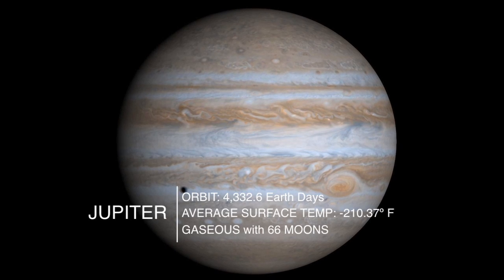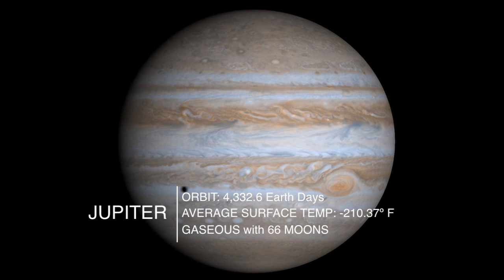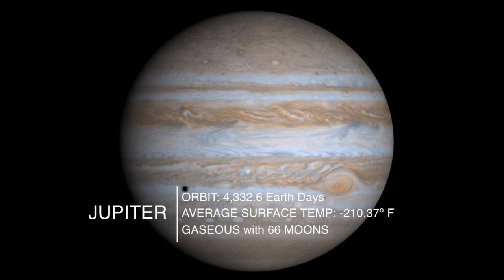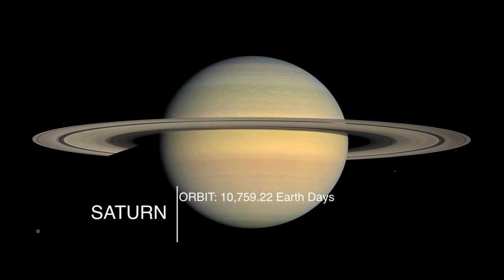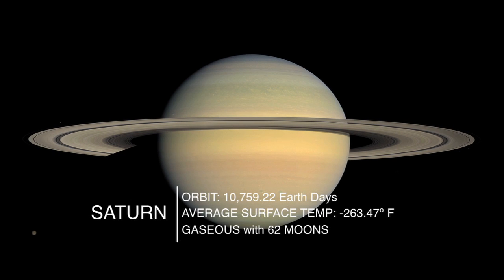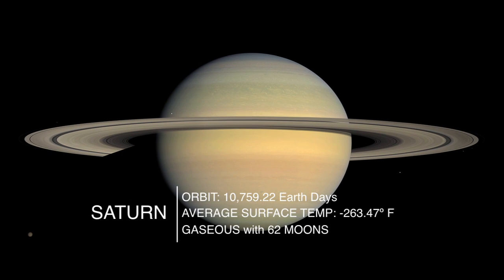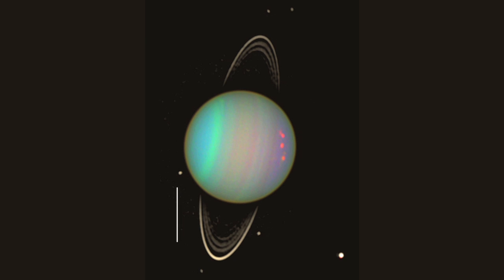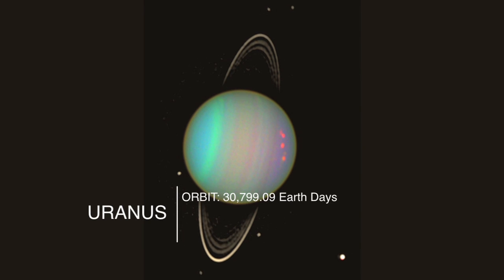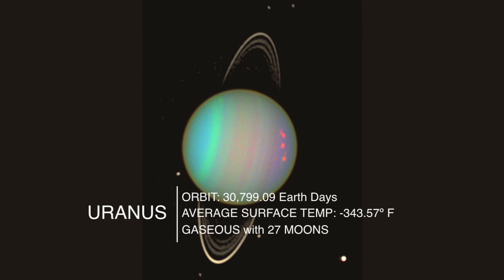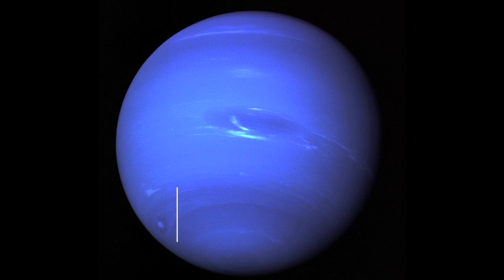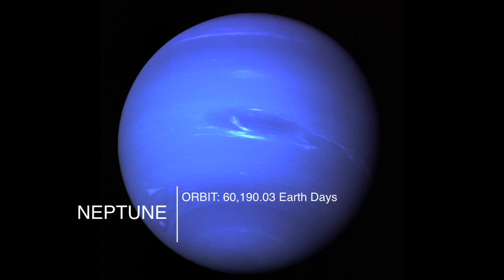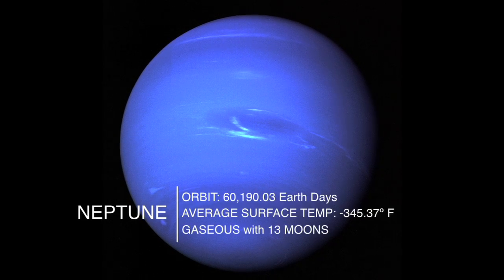The outer planets also have similar properties. They are mostly composed of gases. Because they are further from the sun, they have larger orbital paths and lower surface temperatures. They are larger in diameter and each have more than one moon, some with as many as 66.